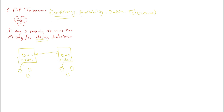Now we will see what availability means. Considering the same scenario: whenever any user tries to read or write some data to the data node, it should always be available. It should not say 'I am not able to process your request' or 'I am not able to give a response from the database.' So the data node should always be available.